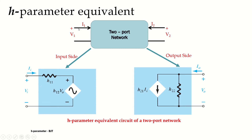The first equation characterizing the input, V1 = H11·I1 + H12·V2, can be represented as a series combination of a resistance of magnitude H11 and a dependent voltage source of magnitude H12·V2. Similarly, the second equation, I2 = H21·I1 + H22·V2, can be represented as a parallel combination of a dependent current source and a resistance connected across the output terminal.